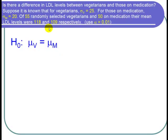H1, since we want to find out if there's a difference, not less than or greater than, H1 is that mu sub v is not equal to mu sub m.